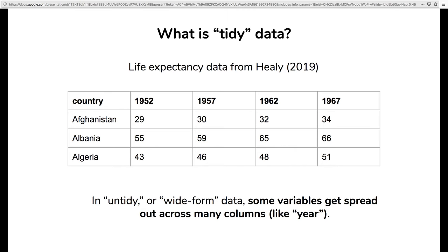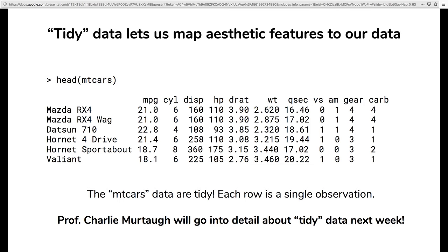The MT Cars dataset is tidy — each row is its own observation and each column is a single variable: the first column is make and model, the second is miles per gallon, et cetera. Dr. Charlie Murtaugh is going to go into much more detail about tidy data, how to manipulate it, and what the tidyverse is next week. I would definitely recommend going to that — the tidyverse is a super useful unified theory of data wrangling and manipulation in R.